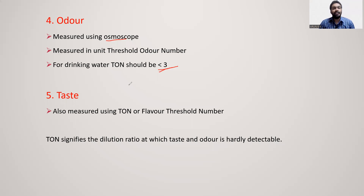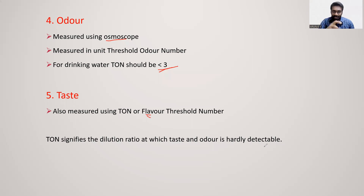Taste is measured by the Flavor Threshold Number. TON signifies the dilution ratio at which taste and odor are hardly detectable. Taste and odor together are measured using this dilution ratio as a good measure.